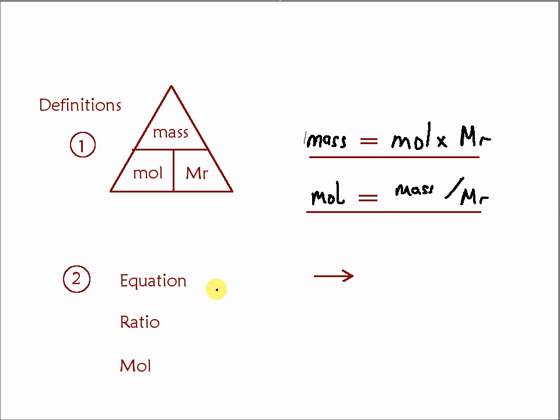Second idea is that if we've got an equation in which say we've got A reacts to give 2B then we'd say the ratio of A to B is 1 to 2. So that means however much of A you've got, so we've got 0.02 mole of A, then that would form twice as much. So in this case 0.04 mole of B.